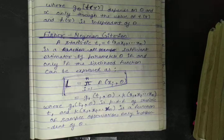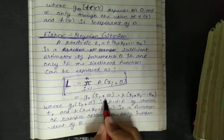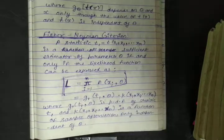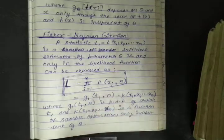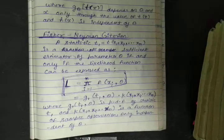If it is not clear to you, everything will become clear while solving the numerical. Just remember that one value is dependent on θ and another value is independent of θ, and it must contain a statistic t.